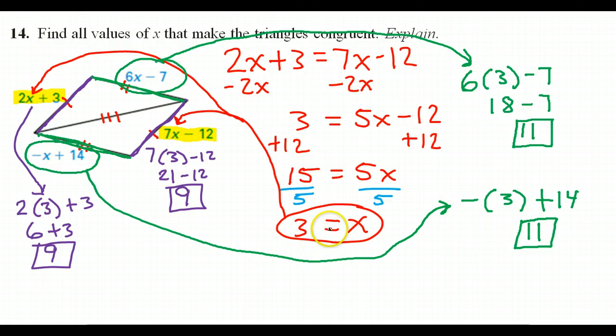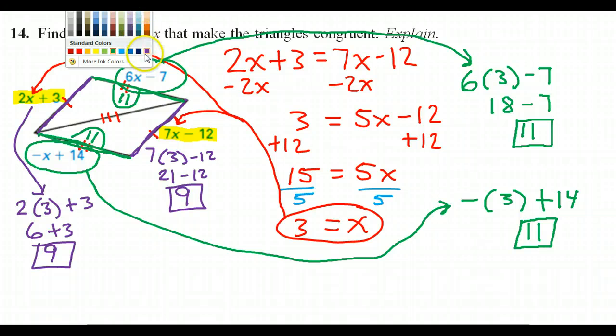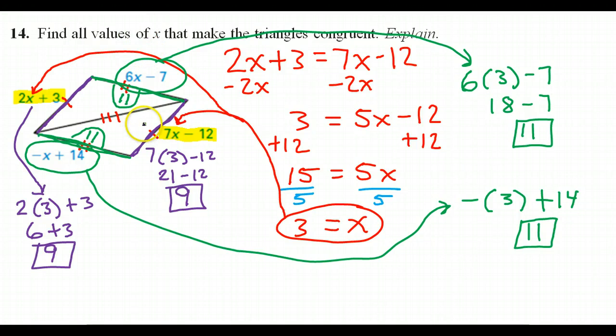Okay, so at the end of the day, if I let x be 3, for the green sides, I'm going to get 11. If that happens, this will be 11 and this will be 11. And for the purple sides, I got 9. So this would be 9 and this would be 9. Okay, so we're getting these sides to be congruent just like we wanted, which would, in fact, make the triangles congruent. So x equals 3 is definitely a solution.